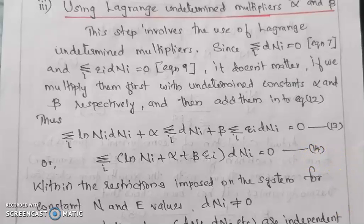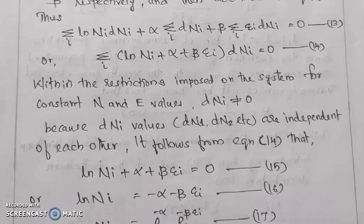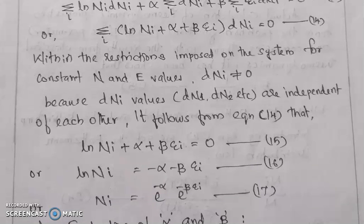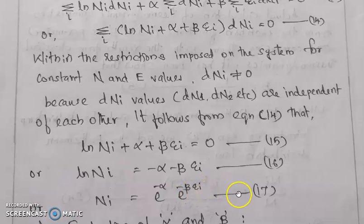Within the restrictions imposed on the system — constant N and E values — if dNi is not equal to zero, and dN1, dN2 are independent of each other, it follows that the coefficient of each dNi must vanish: ln Ni plus alpha plus beta epsilon i equals 0. That is equation 15. Therefore ln Ni equals minus alpha minus beta epsilon i, which is equation 16. Exponentiating: Ni equals e raised to minus alpha, times e raised to minus beta epsilon i. That is equation 17.